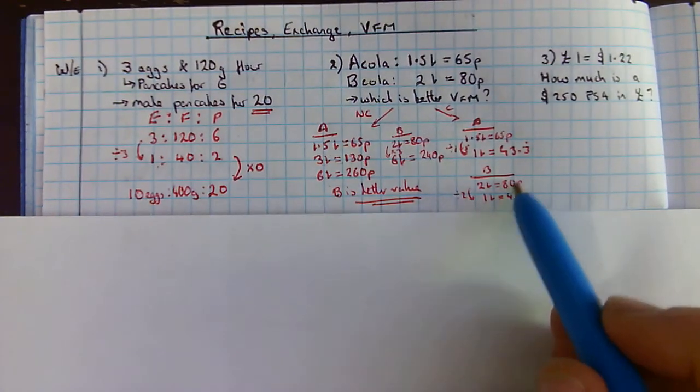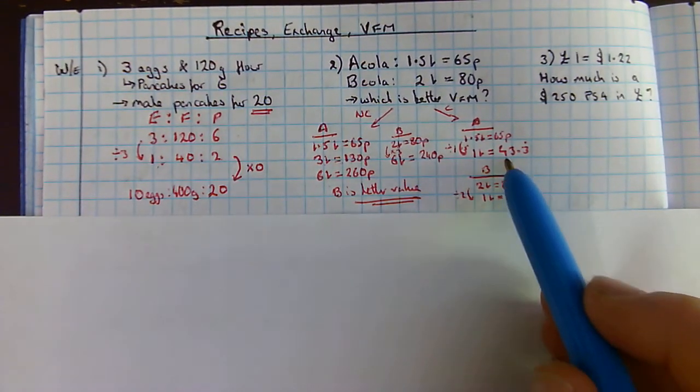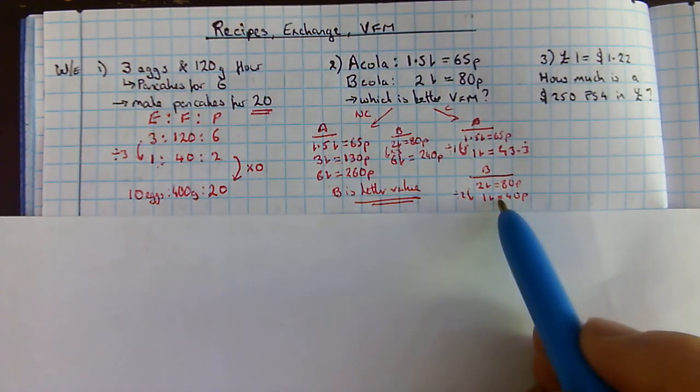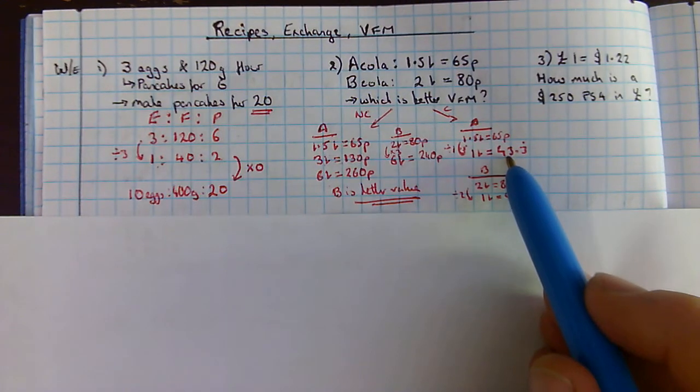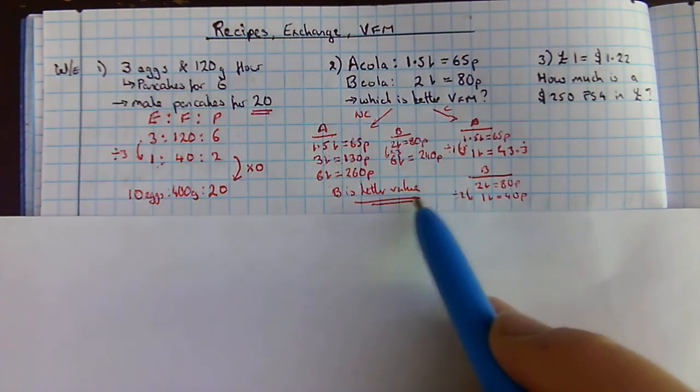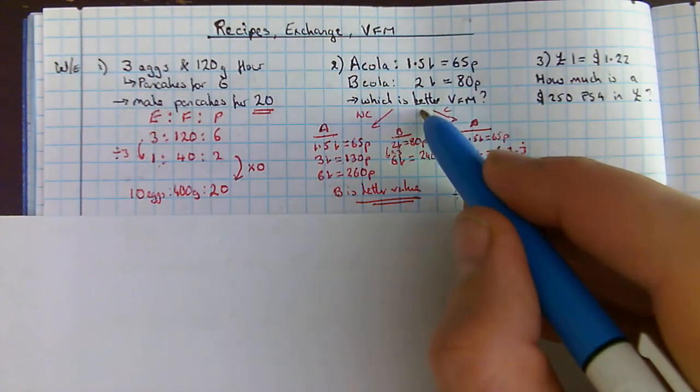So, again, if I'm allowed to use my calculator, easiest to go down to 1 litre, see which one's cheaper. Here, 1 litre would cost me 40p. 1 litre would cost me 43.3p. So, either way, whichever way I choose, I should be able to see that B is better value for money.